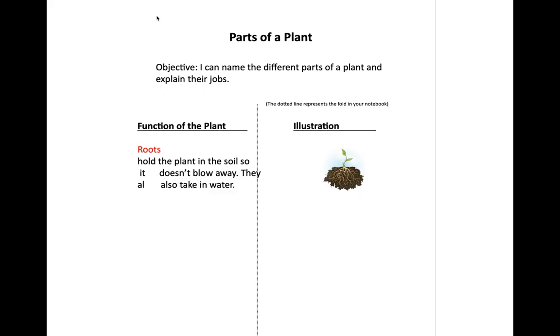Parts of the plant - this is how it needs to look in your notebook with the title on top and your objective right underneath. We're going to do that fold. Remember that folded sheet that we folded in half inward towards the rings of the notebook? On one side you're going to write functions of the plant, and we're going to start with the roots.